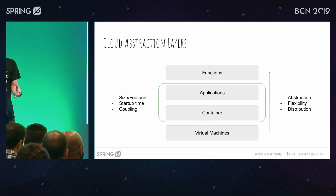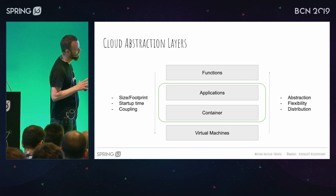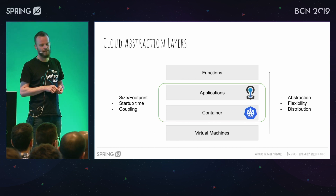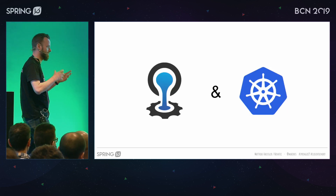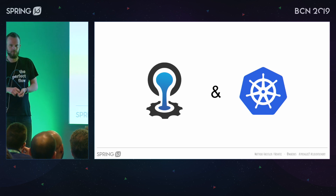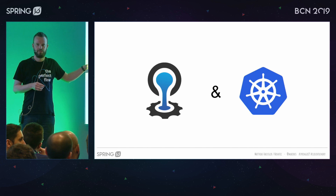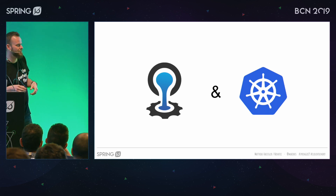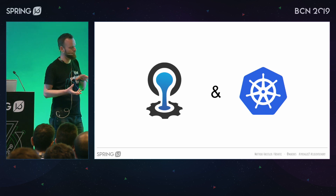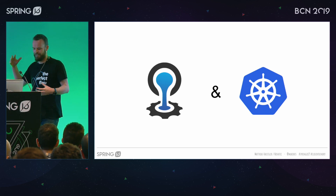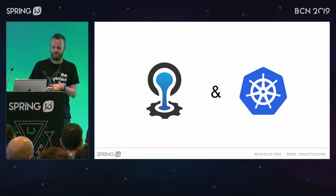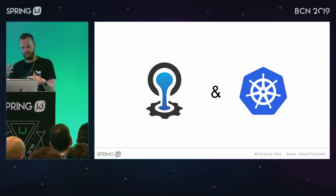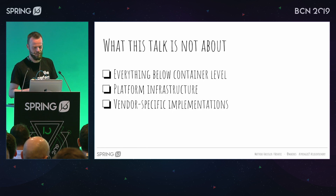To demonstrate how I can deploy and run Spring Boot workloads on those layers, I'm going to use the examples of Cloud Foundry and Kubernetes. Who in the room has ever worked with Cloud Foundry? That's a few. Who has been working with Kubernetes? That's a few more. When I started talking about this about one and a half years ago, it was quite the opposite. Kubernetes was just in the very beginning, but it has a very strong adoption rate and it's growing really fast.